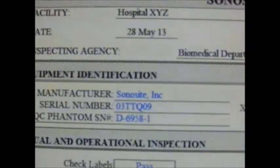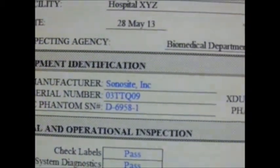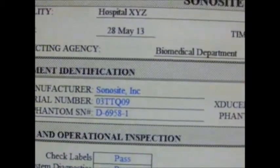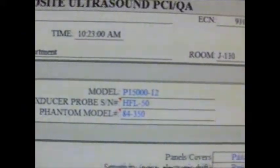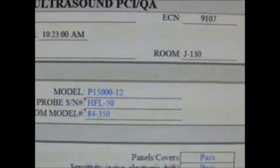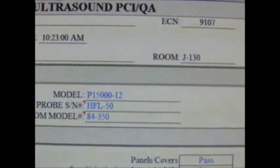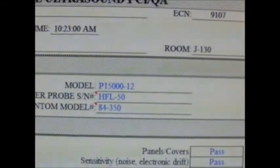In the far corner we have the facility name, which is Hospital XYZ, today's date, inspecting agency, which is the biomed department, the ECN or equipment control number or index number or asset tag, as well as the equipment room number.